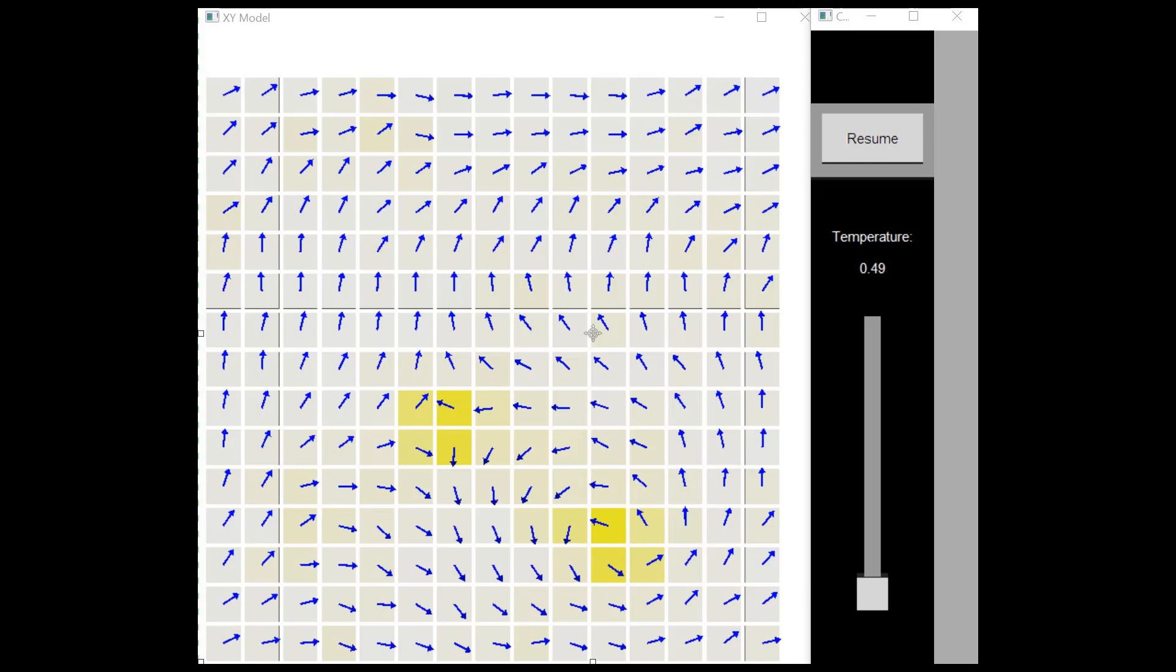One of the more interesting features of the XY model is the existence and behavior of vortices, which are a topological spin configuration. When tracing out a closed loop path around a vortex, the spins along the path will make a rotation of plus or minus 2π times an integer. This is part of the definition of a vortex.